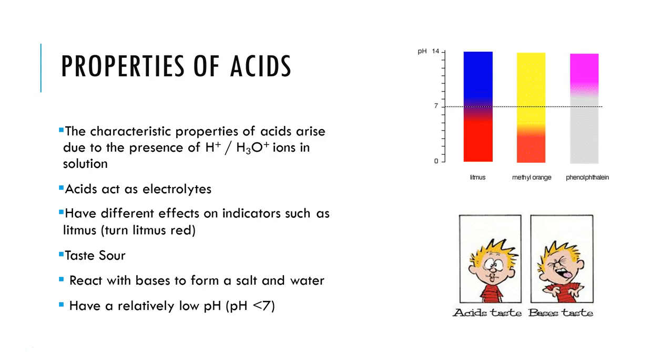Properties of acids you should be familiar with. And these are that the H+ ions in solution cause acids to act as electrolytes. That is, they can conduct electricity. So the higher the concentration of hydronium, the more electricity will be conducted. They have different effects on indicators such as litmus. So they turn litmus red, but other indicators such as methyl orange and phenolphthalein will have a different reaction to acids. They taste sour, as we know from the crystals on the outside of things like sour worms. That's actually citric acid. And that sour taste comes from the acid. We also know that acids will react with bases to form salt and water in a neutralization reaction. And they tend to have a relatively low pH defined as less than 7.